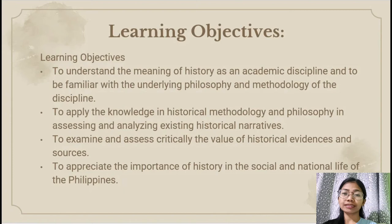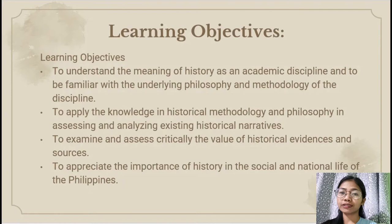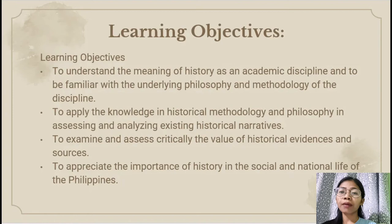Chapter 1 will introduce history as a discipline and as a narrative. It represents the definition of history, which transcends the common definition of history as the study of the past. This chapter also discusses several issues in history that open up the theoretical aspects of the discipline. The distinction between primary and secondary sources is also discussed, as well as the task of the historian as the arbiter of facts and evidences in making interpretation and forming historical narrative.